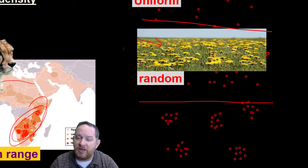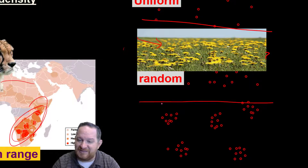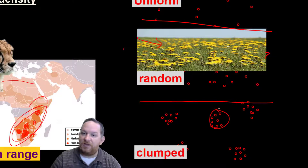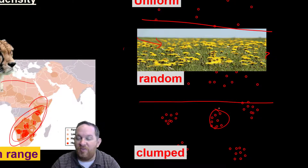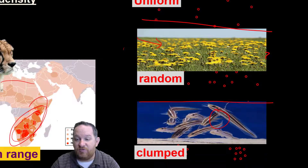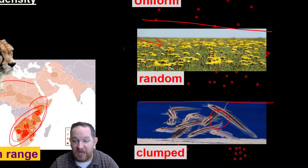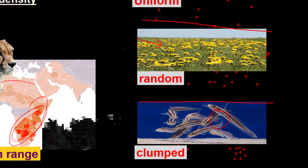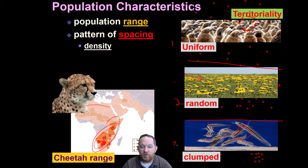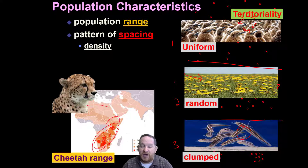And then in this last example, you might see — okay, I see some definite pattern. These are clumped together. So we call that the clumped pattern. We see this a lot if you think of schools of fish clumping together, or other pack animals clumping together. So you see these three spacing patterns — uniform, random, and clumped — that we see commonly in populations.